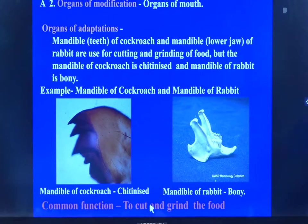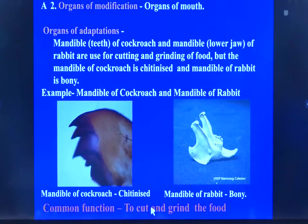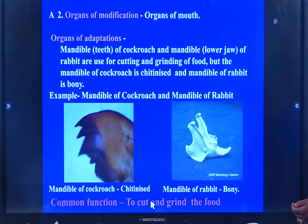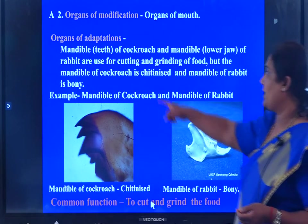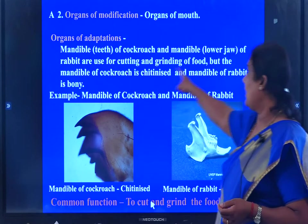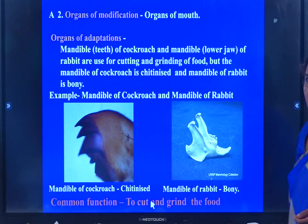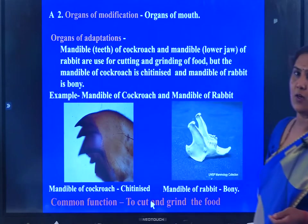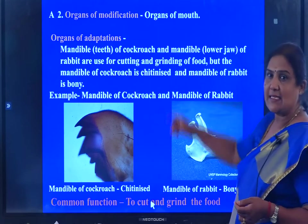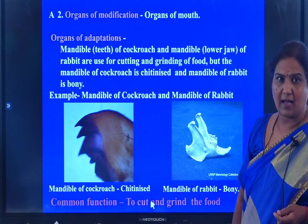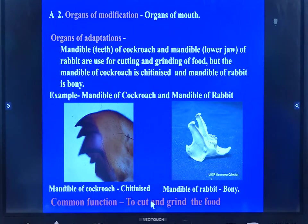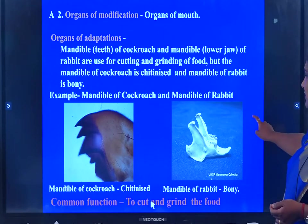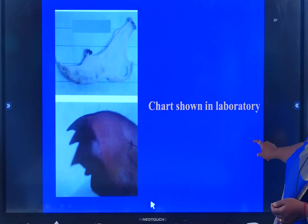Analogous organs — example two. The organs of the mouth. The mandible of the cockroach and the mandible of the rabbit are both used for chopping and grinding food. But they differ in their origin. The mandible of the cockroach is chitinized — it is made up of chitin, a carbohydrate. The mandible of the rabbit is bony, made up of bone. But the common function is to cut and grind the food. This is the chart we have in the lab.